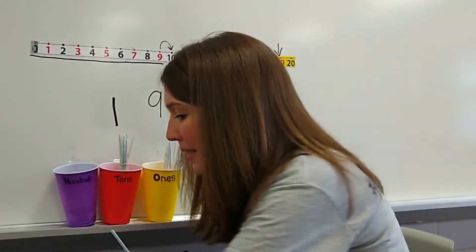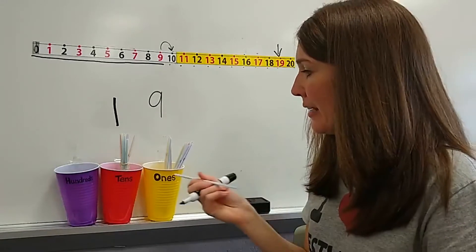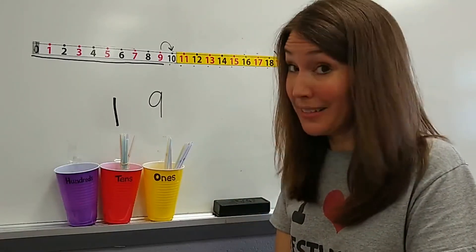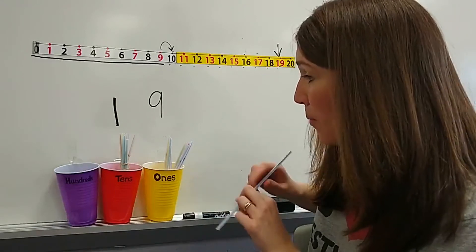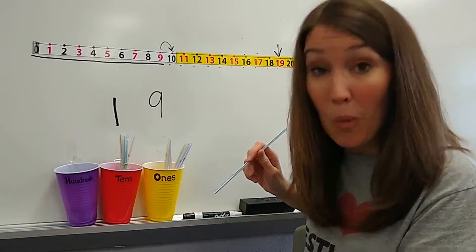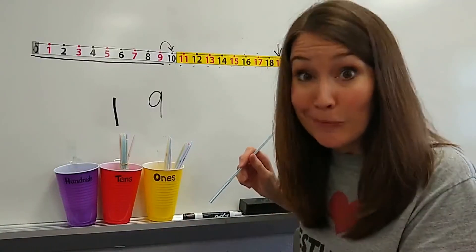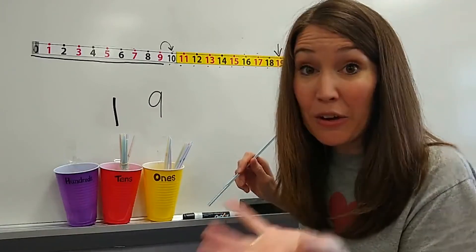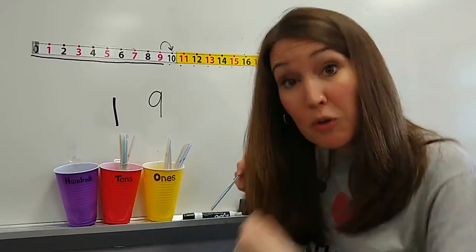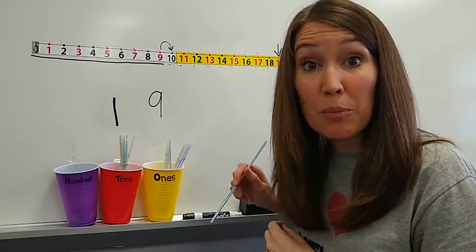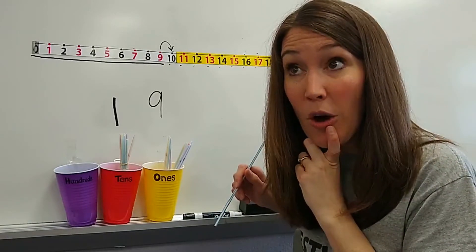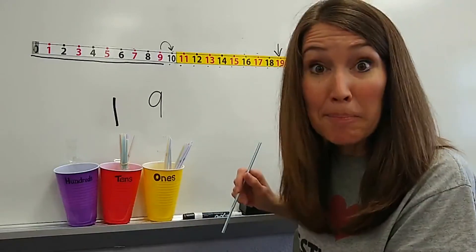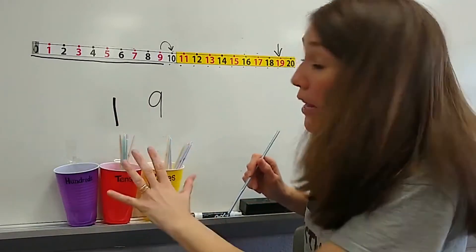Are you ready? Stop and think. I have nine straws in the ones cup. That's as many as it can hold. So when I go to put one more straw in the ones cup, what will happen? That's right. They can't stay there. They will become a unit. They will become a group of 10. And where does a group of 10 need to go? In the tens cup. So let's watch and see what happens and then we'll make our numbers match. You ready? Okay.